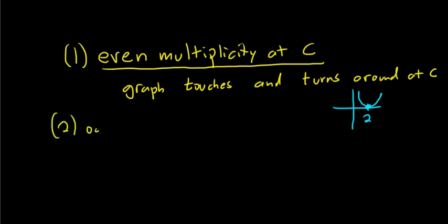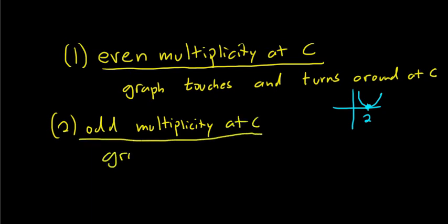Two, if you have an odd multiplicity, so odd multiplicity at C, then in this case, the graph crosses at C. So in this case, the picture would look something like this. Say two was the zero, so it would just cross, right? It would just cross at C.